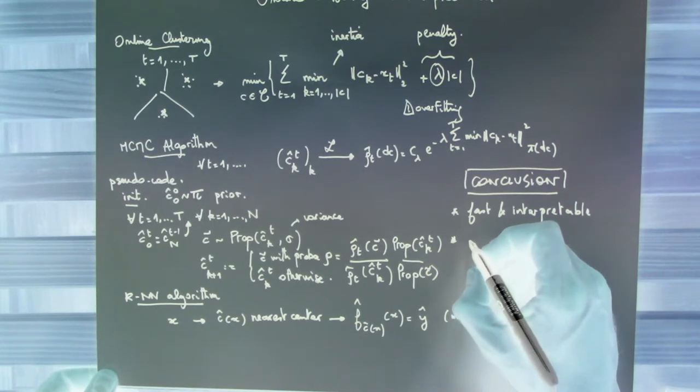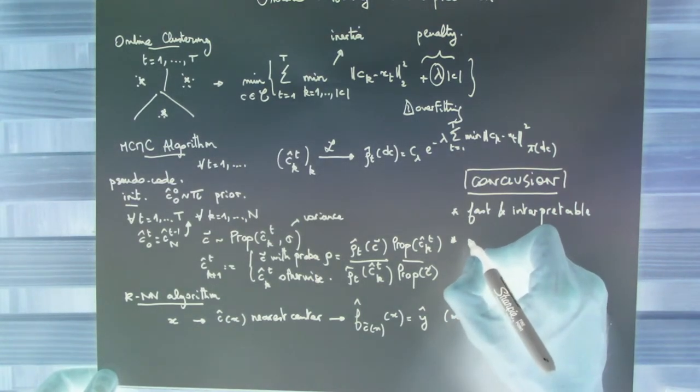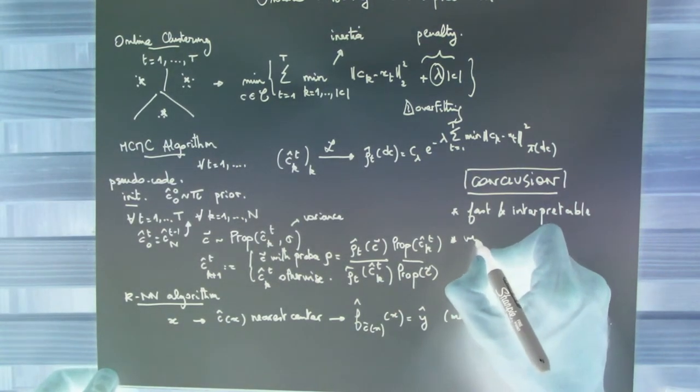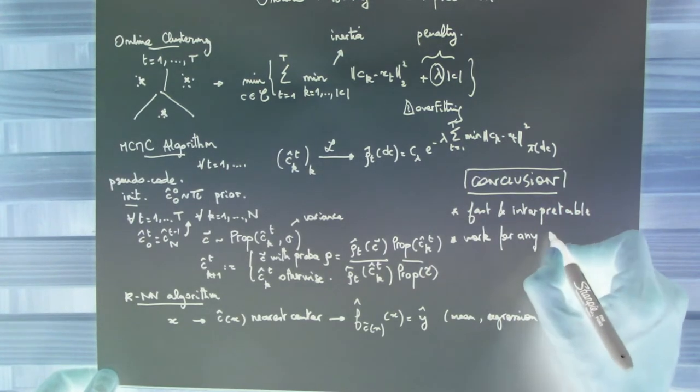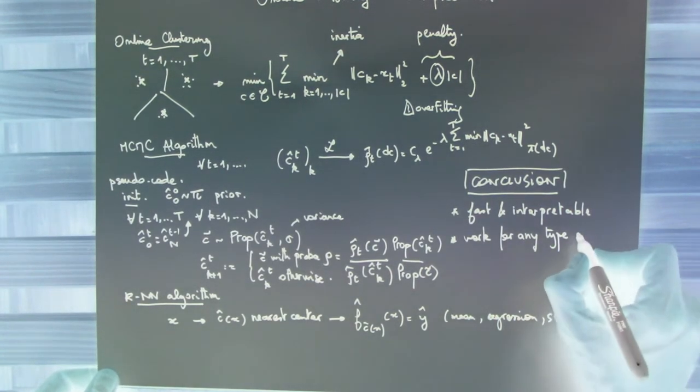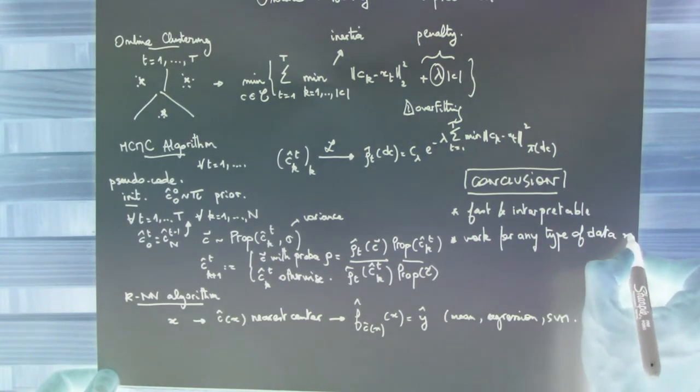This theoretical approach, explained above, works for any type of data, that is to say vectors, time series, or text. The only thing you need is the distance between two entities X and X prime.